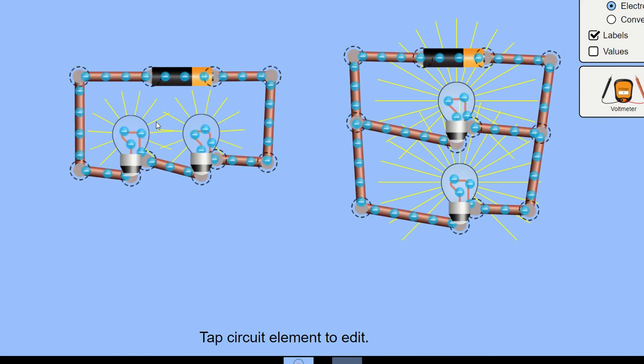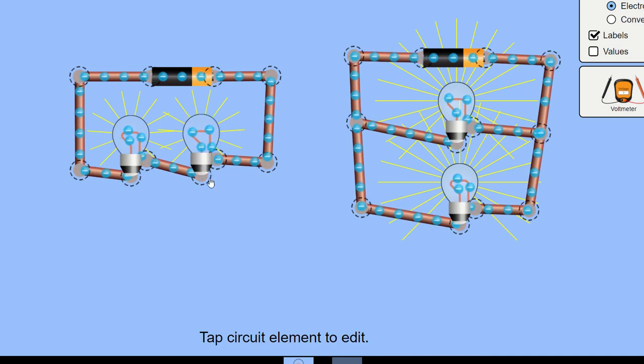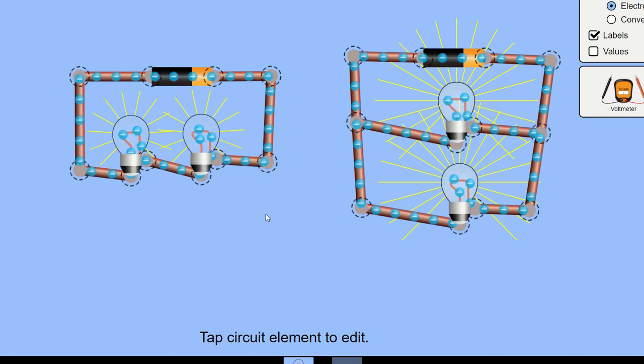The second point we need to factor in is if all the different loads, so all the different resistors and light bulbs, if all of them are in the same loop, they are in series to each other. If the bulbs or the loads are in opposing loops, or in different loops to each other, or different pathways, that's probably a lot more clearer to understand. If they're in different pathways to each other, then we are looking at a parallel circuit.